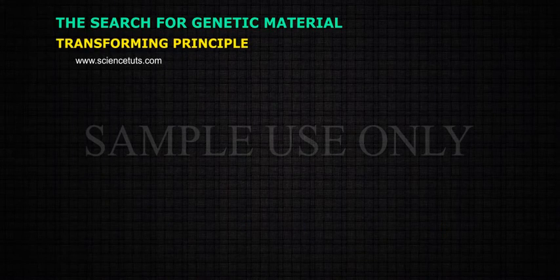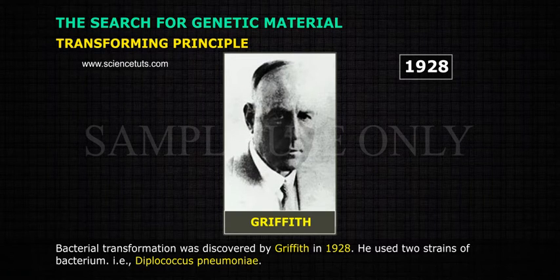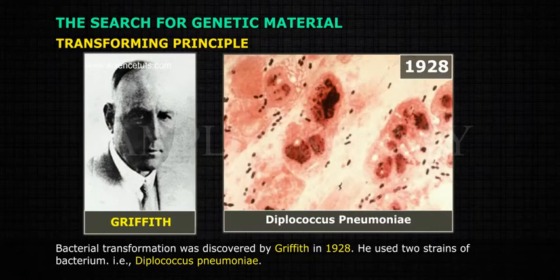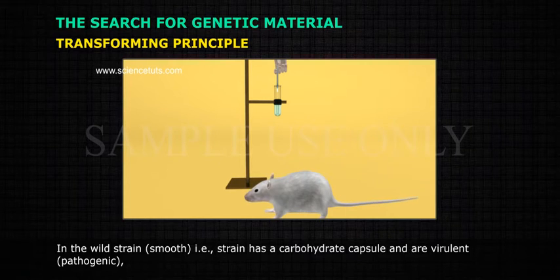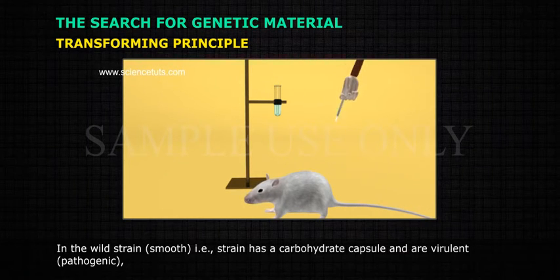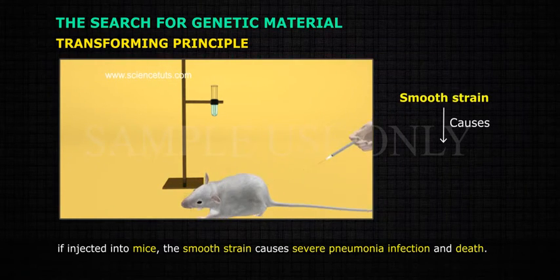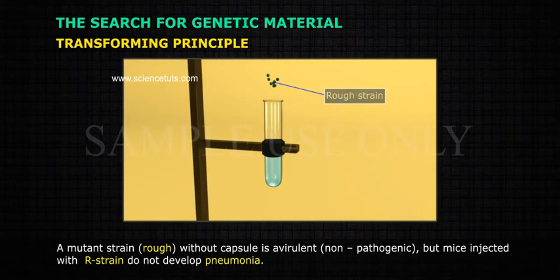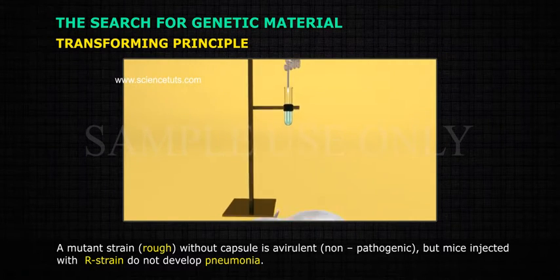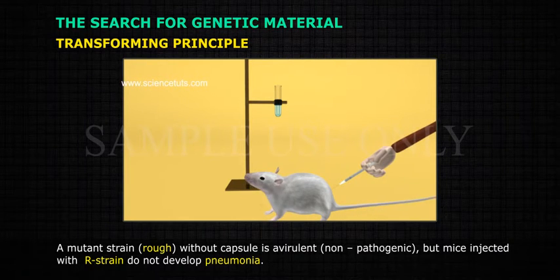Transforming Principle: Bacterial transformation was discovered by Griffith in 1928. He used two strains of Diplococcus pneumoniae. The wild strain, smooth (S), has a carbohydrate capsule and is virulent and pathogenic if injected into mice, causing severe pneumonia infection and death. A mutant strain, rough (R), lacks the capsule and is avirulent and non-pathogenic — mice injected with the R strain do not develop pneumonia.